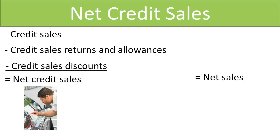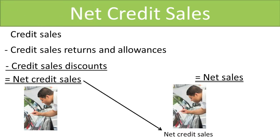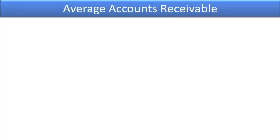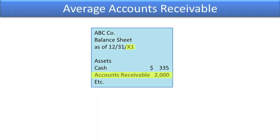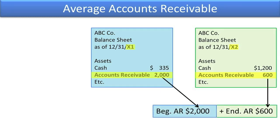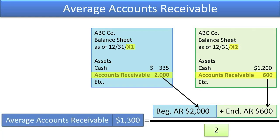One drawback to using net sales is that although it does include the net of all sales on account, it also includes the net of all cash sales, which can inflate the AR Turnover Ratio. Just make sure that when you compare the AR Turnover Ratio of different companies, you ensure that you use the same numerator, whether it be net credit sales or net sales. Average accounts receivable represents the average of the beginning and ending accounts receivable, computed by adding them together and dividing by two, to eliminate some of the fluctuation in the account from the beginning of the period to the end.